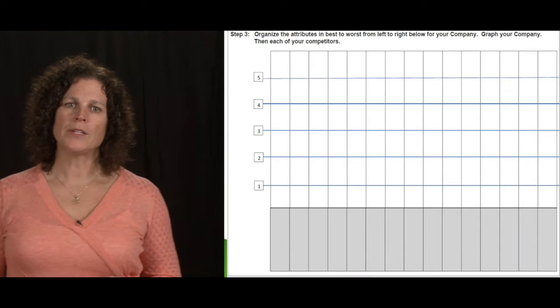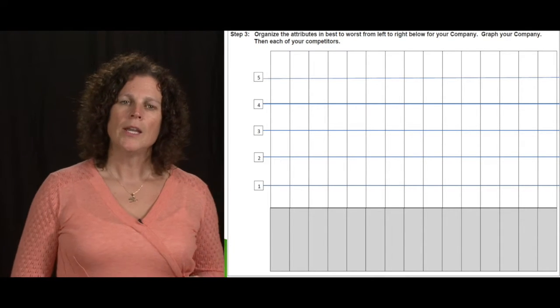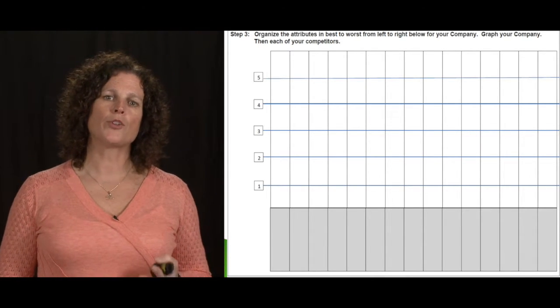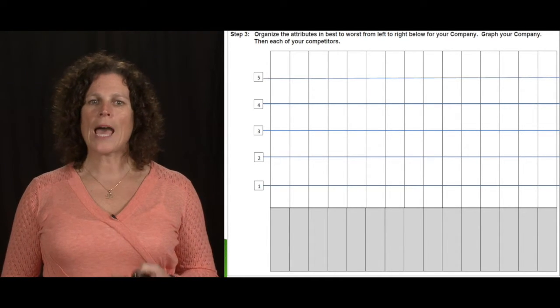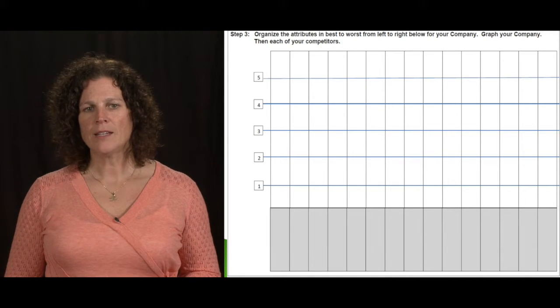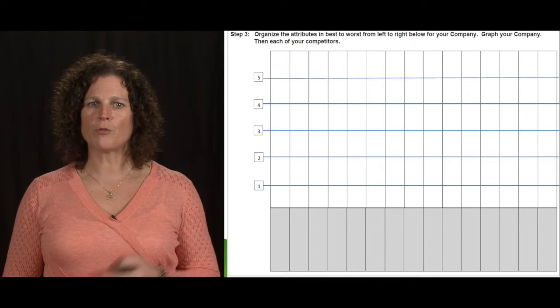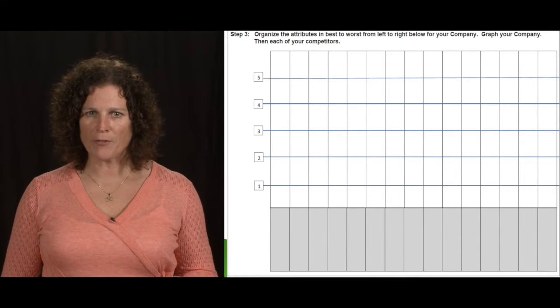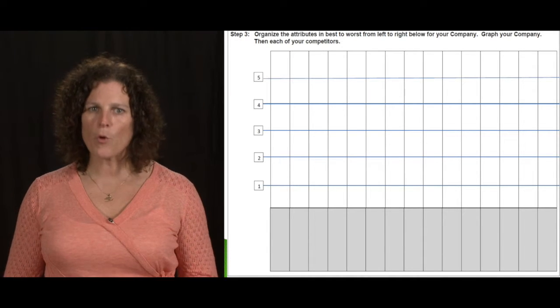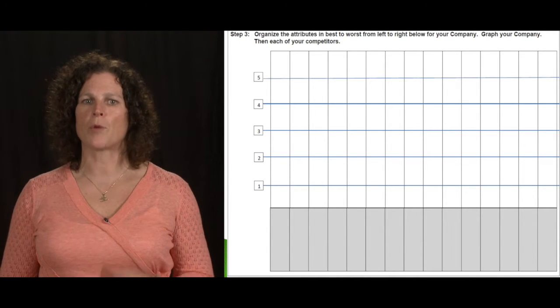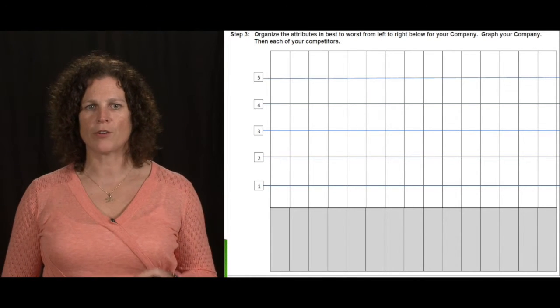The next step you want to do is go to the graph, which is on the second page of this tool. You want to write the attributes at the bottom of the page in the gray section with what attributes your company is best at. We're going to go from left to right, writing all your number fives, the attributes that you ranked as number five, and then number four, number three, number two, number one.